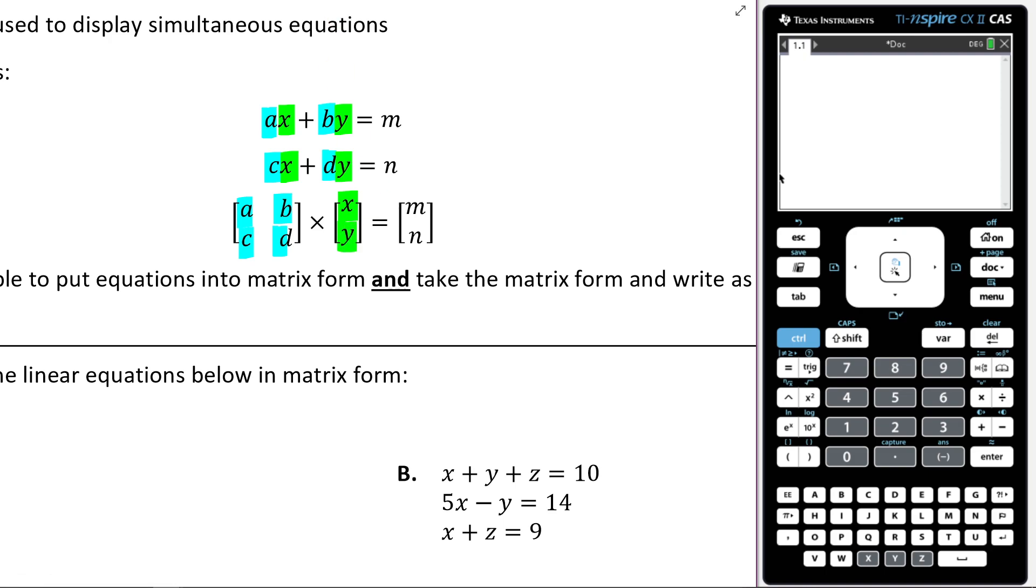And then you've got your answers. So we've got m and n, m and n there. And that's how you take simultaneous equations and write them as matrices.